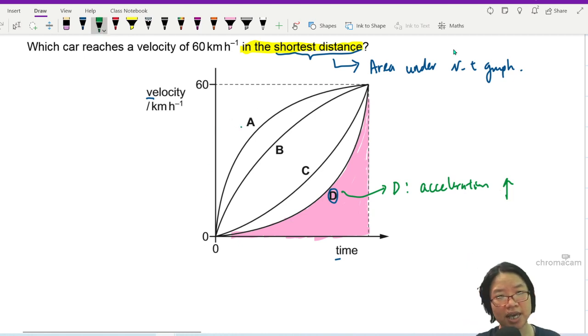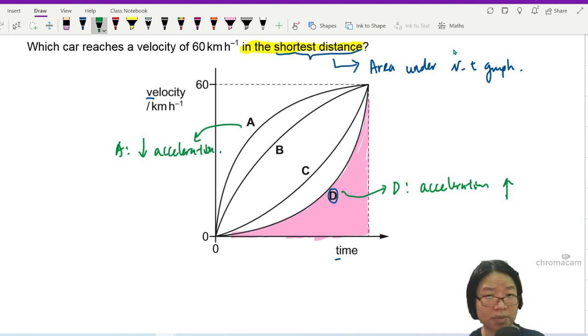Because A has a decreasing acceleration. It's still accelerating, but it is decreasing. So it's a bit like,